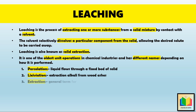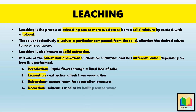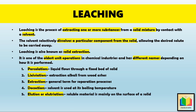The next name is extraction, which is a general term for separation processes including leaching. Next is decoction, which is a special type of leaching where the solvent is used at its boiling temperature. Then another name is elution, or elutriation. Elution occurs when the soluble material is mainly on the surface of a solid and is simply washed off.